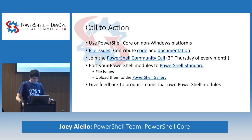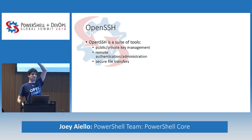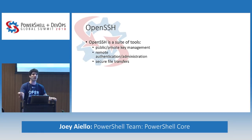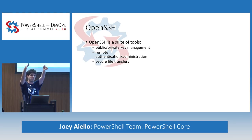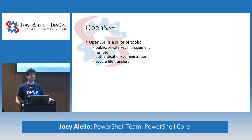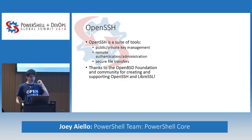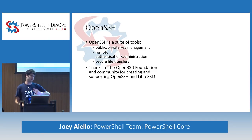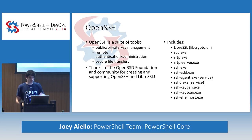OpenSSH is a suite of tools for public-private key pair management. The public key is shared with everybody; the private key is essentially your password. It provides remote terminal administration — PowerShell remoting before it was PowerShell remoting. We support SCP and SFTP for secure file transfers using public-private key pairs. Shout out to the OpenBSD Foundation, the OpenSSH and LibreSSL projects — everything we're doing with OpenSSH in Windows is derived from their 20-year-old codebase. LibreSSL was an awesome response to OpenSSL's Heartbleed issue.